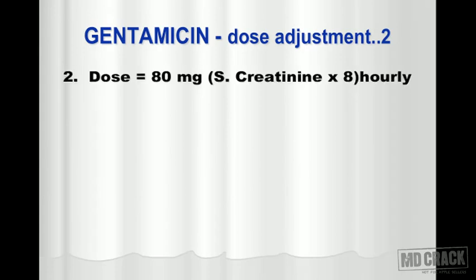In the second method, the formula is very interesting: the dose is equal to 80 milligrams, and the interval is serum creatinine multiplied by 8 hourly. So the amount is constant at 80 milligrams, and I'm going to vary the frequency of administration. The frequency — after how many hours it is to be given — is decided by serum creatinine multiplied by 8.